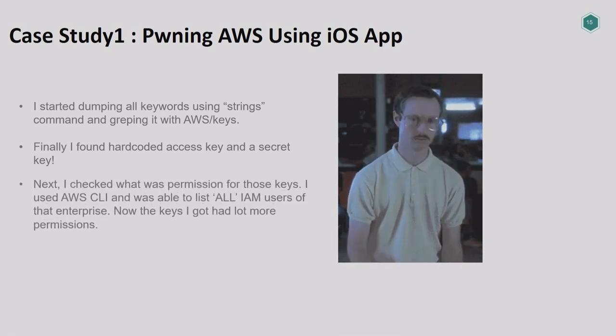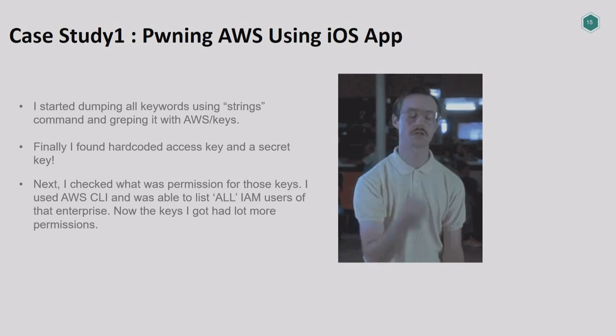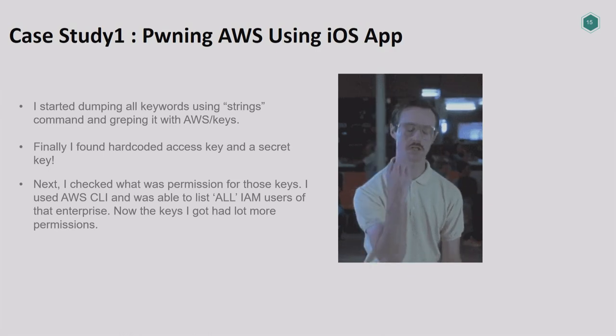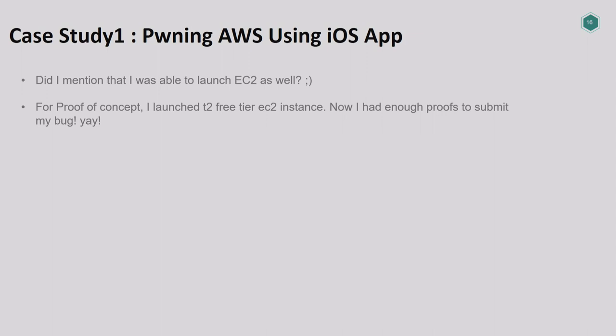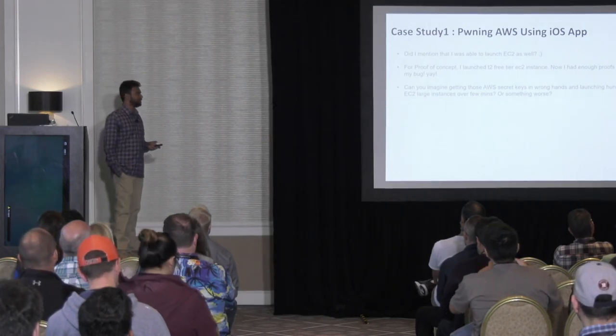Once I got the keys, the impact depends on the permissions. I was able to list all the IAM users of that particular enterprise because it was also misconfigured in AWS. The first mistake was hardcoding the keys, and the second was the permissions issue. For proof of concept, I launched one free-tier EC2 instance and submitted the report. But imagine those access keys in the wrong hands — someone could launch hundreds of thousands of EC2 instances in a minute, use them for Bitcoin mining, and cause millions in losses.